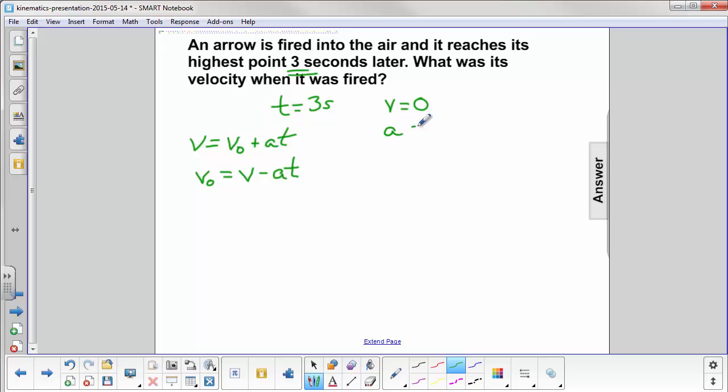Acceleration, we know, is negative 9.8 meters per second squared. It is always directed down, hence the negative sign.